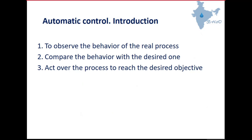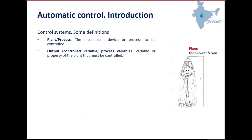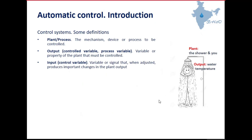Let's see some important definitions using the shower example. First, a plant or process is the device that you want to control — in the case of the shower, the plant is the shower itself. The output, also called the controlled variable or process variable, is the variable that you want to control — in the case of the shower, the output is the temperature of the water.